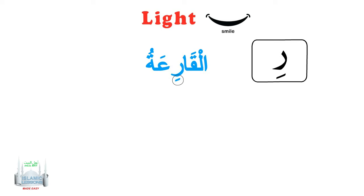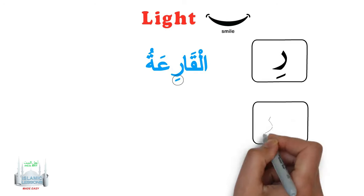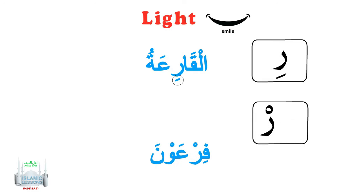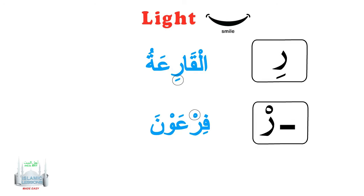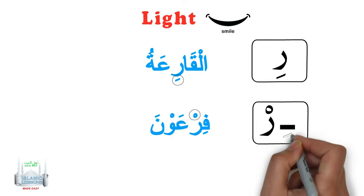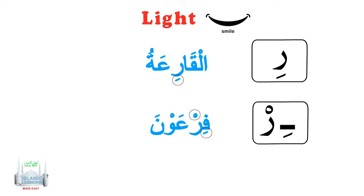If the Ra has a sukoon, we look at the letter before it. If it has a kasra in the same word, it will also be pronounced light. It reads as Fir'aun with a light Ra.